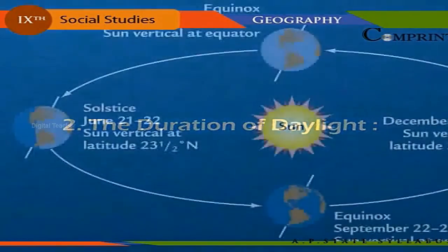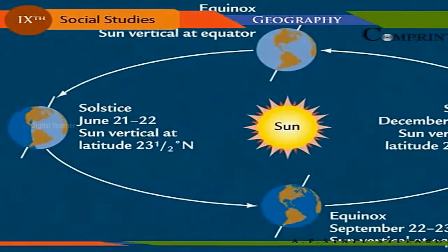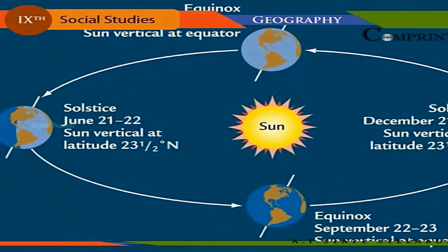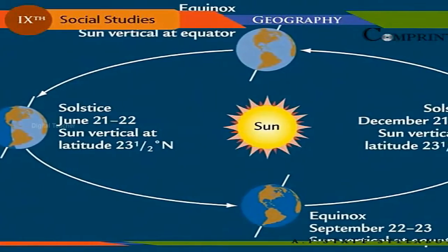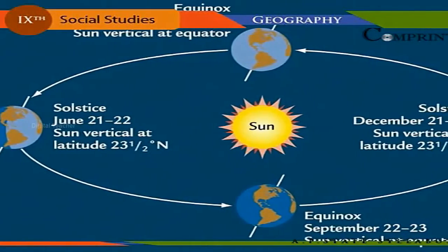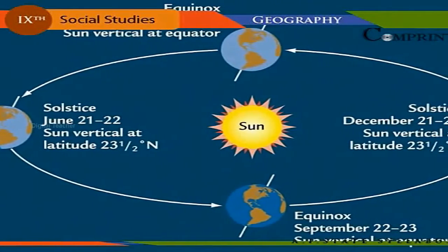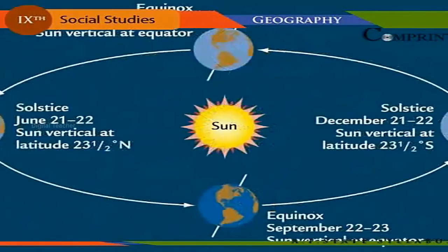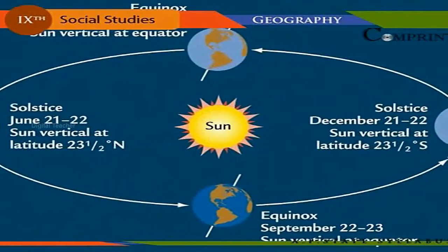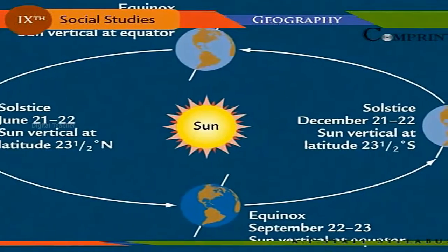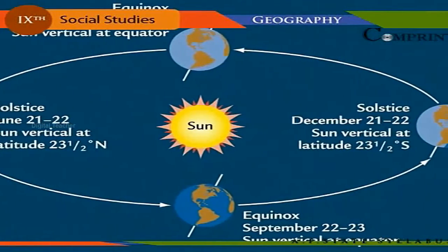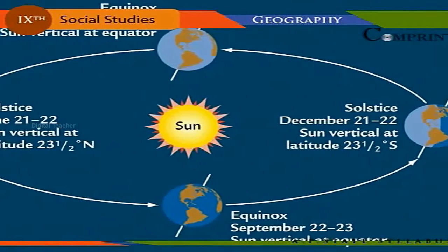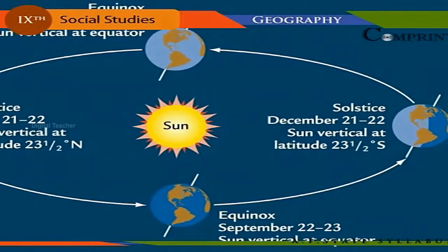The duration of daylight: the Sun is the natural furnace that heats up the Earth's surface, so the longer an area receives sunlight, the greater the amount of insolation.